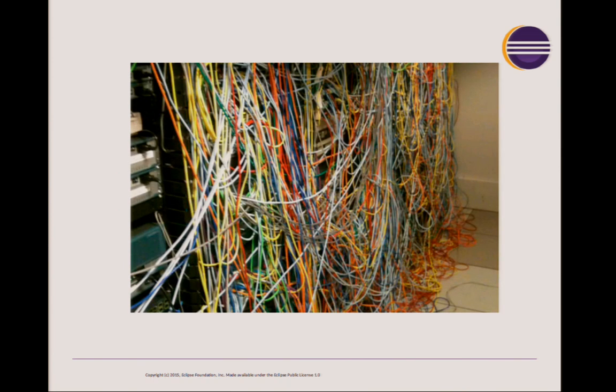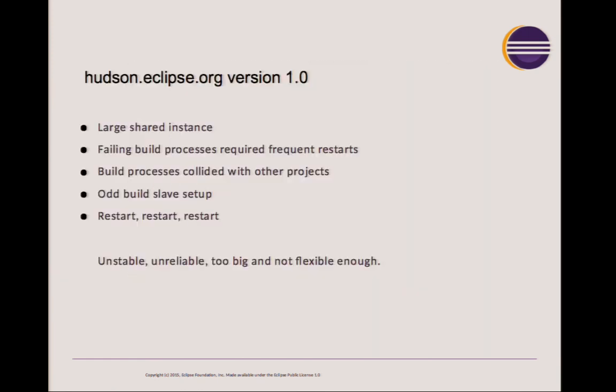Our data center actually still looks like that, but at least our builds do not. The first iteration of Hudson that we installed at Eclipse.org was around 2007, and it was essentially a community-led effort. A team of committers installed Hudson, put up a web page and said, 'Hey, we're doing builds this way.' And it was great. Eventually the Foundation kind of took over the service and figured, yeah, this is really good and really important. So our very first implementation was a very large single Hudson instance where all the projects could run builds.